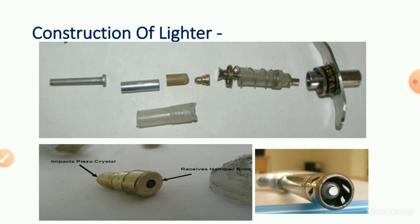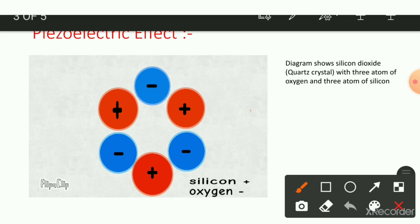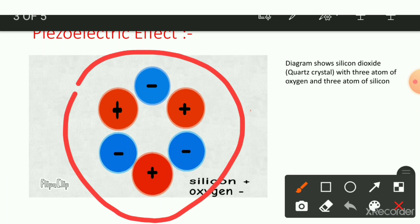Quartz crystal is made up of silicon dioxide. This diagram shows the silicon dioxide crystal — it has six atoms: three atoms of silicon and three atoms of oxygen. Positively charged silicon and negatively charged oxygen are present. This is called the quartz crystal diagram.